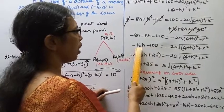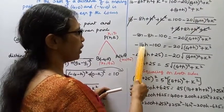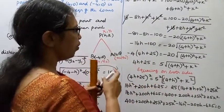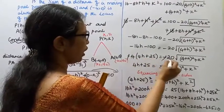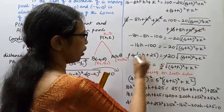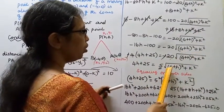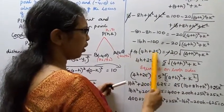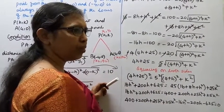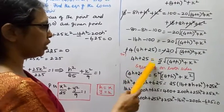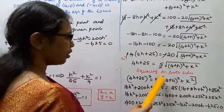Factoring out -4 from the left side: -4(4h + 25) equals -20 root of (4 + h) squared plus k squared. Cancelling -4 and dividing: (4h + 25) equals 5 times root of (4 + h) squared plus k squared. Now squaring both sides again to remove the square root: (4h + 25) squared equals 25 times [(4 + h) squared plus k squared].